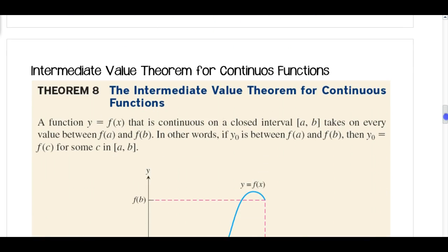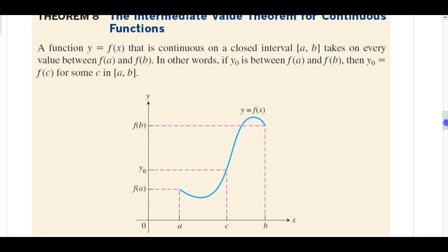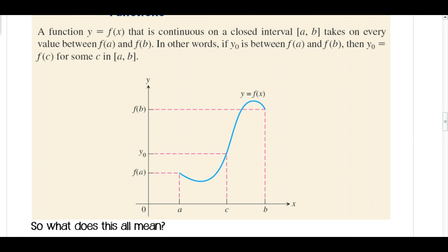Moving on to the Intermediate Value Theorem for Continuous Functions. A function y equals f of x that is continuous on a closed interval a comma b takes on every value between f of a and f of b. In other words, if y sub 0 is between f of a and f of b, then y sub 0 equals f of c for some c in the interval from a to b.